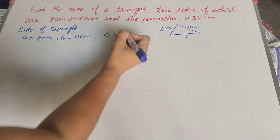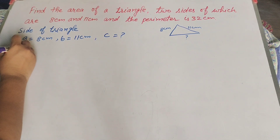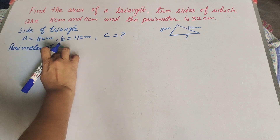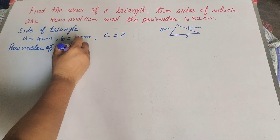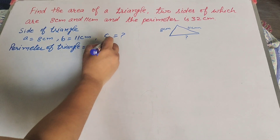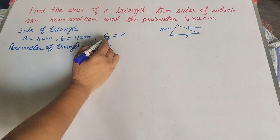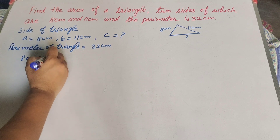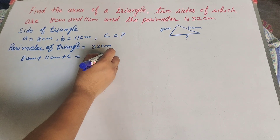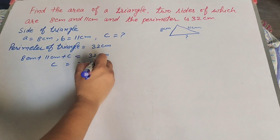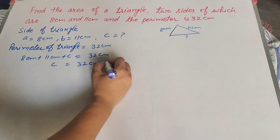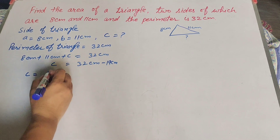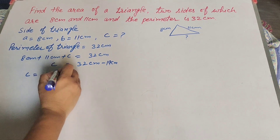We need to find the third side. The perimeter of the triangle is given as 32 centimeters. We know that the perimeter equals the sum of all sides: 8 plus 11 plus c equals 32. Transposing to the right-hand side, c equals 32 minus 19, which equals 13 centimeters.